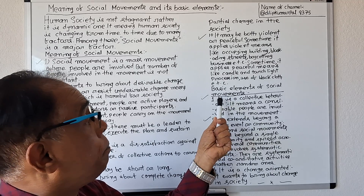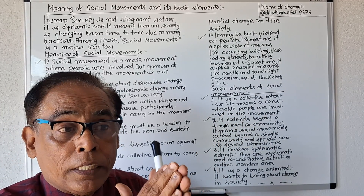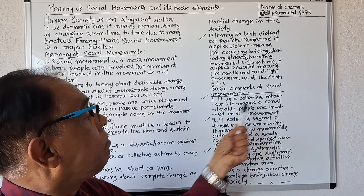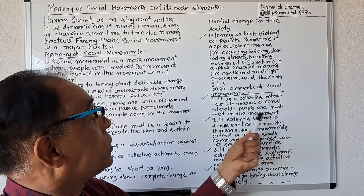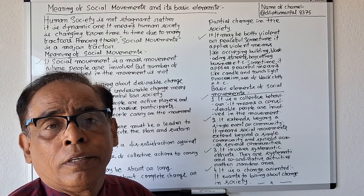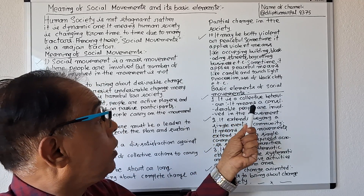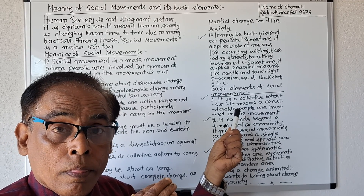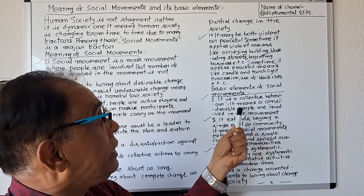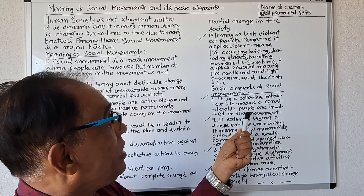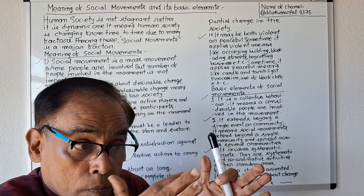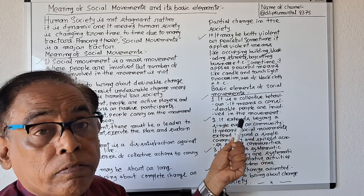Now let us discuss the basic elements of social movements. Social movements have four basic elements. Number one: it is a collective behavior. It means a considerable number of people are involved in the movement. Social movement is not a one-man movement; it is a collective behavior involving a number of people.